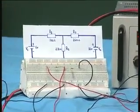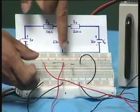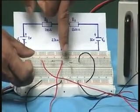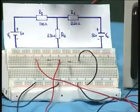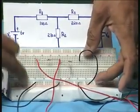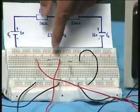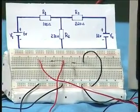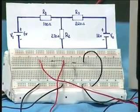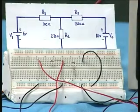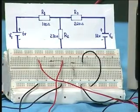Superposition says that you have only one voltage source, find out what is the voltage across the R2 and remove this and connect the other voltage source. Here you connect it by a short and measure what is the voltage. Then you add them together, you will get the total voltage which you will get when both the voltage sources are available. This has been very easily shown.